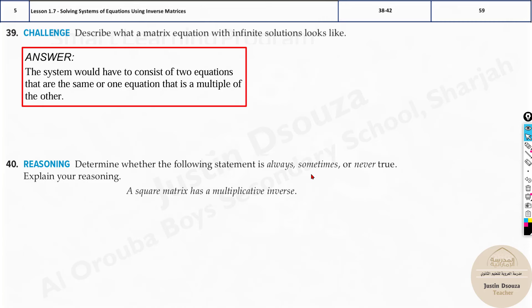Determine whether the following statement is always, sometimes or never true. Explain your reasoning. A squared matrix has a multiplicative inverse. Yes, it has and it doesn't have also, right? Now what is inverse matrix? So if you know the formula.